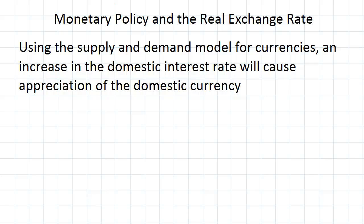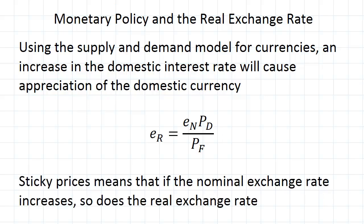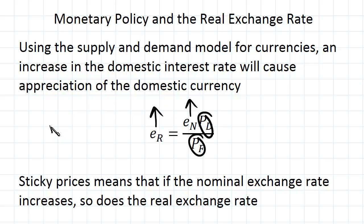We know that the nominal exchange rate is increasing when we get an increase in the real interest rate. But what about the real exchange rate? We know that they have this relationship, but we also know that in the short run we expect prices to be sticky, so these price levels should be constant. This means if the nominal exchange rate increases, the real exchange rate also increases — we get an appreciation of the real exchange rate.